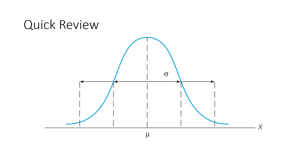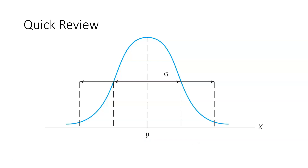But before we begin, I just want to take a moment and review some really important things. First, what does this symbol mean? Pause your video if you need to and take a second to articulate it for yourself. That is pronounced mu — it's the mean of a population. This symbol, sigma, represents the standard deviation of a population.